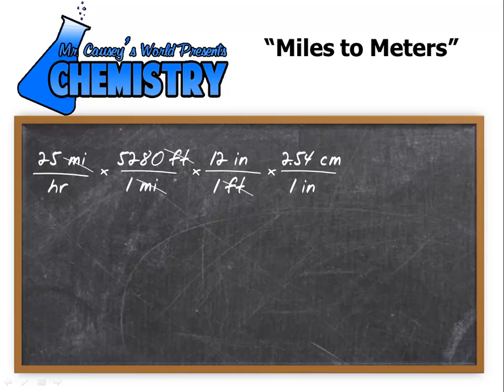We have just changed the English system, the U.S. standard system, into centimeters. Into the metric system. And so let's cross out our inches. And now we know that there are 100 centimeters in a meter.